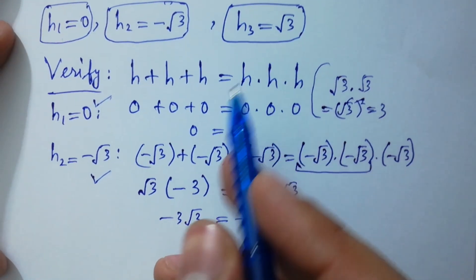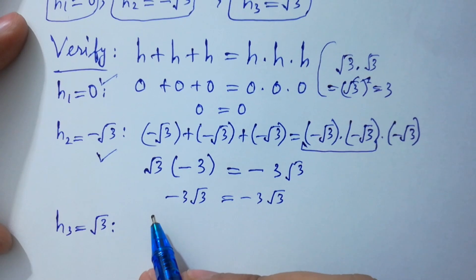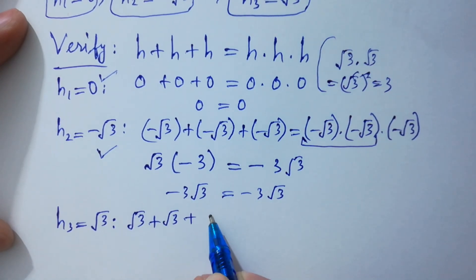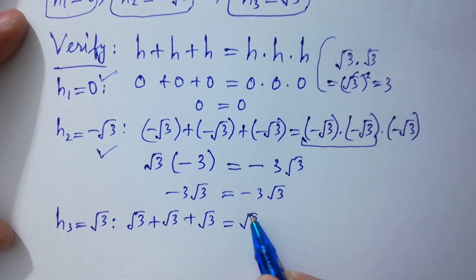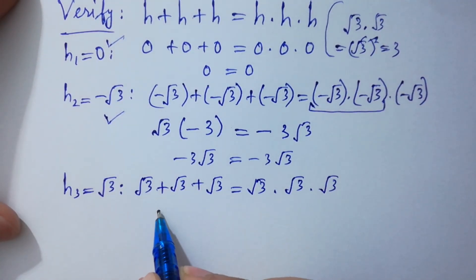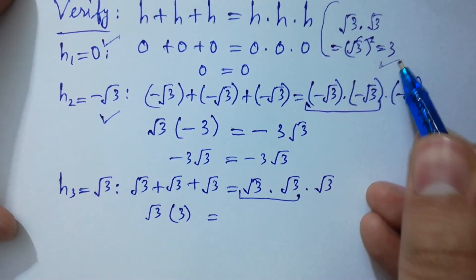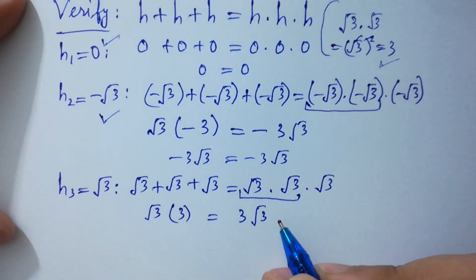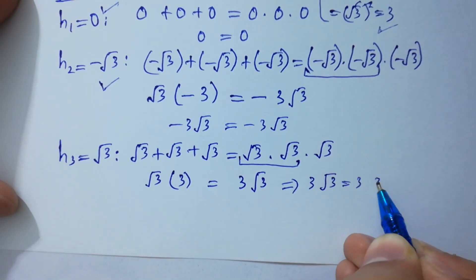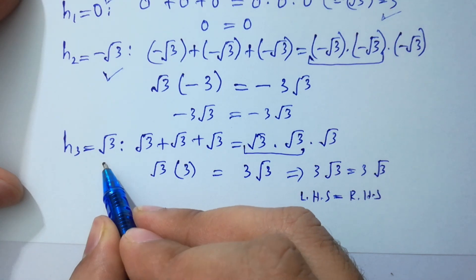If we put h₃ equal to plus √3: √3 plus √3 plus √3 equals √3 times √3 times √3. Factoring √3 on the left gives 3√3. On the right, √3 times √3 equals 3, so 3 times √3 equals 3√3. Therefore 3√3 equals 3√3, so left-hand side equals right-hand side, and h₃ equal to √3 is also correct.